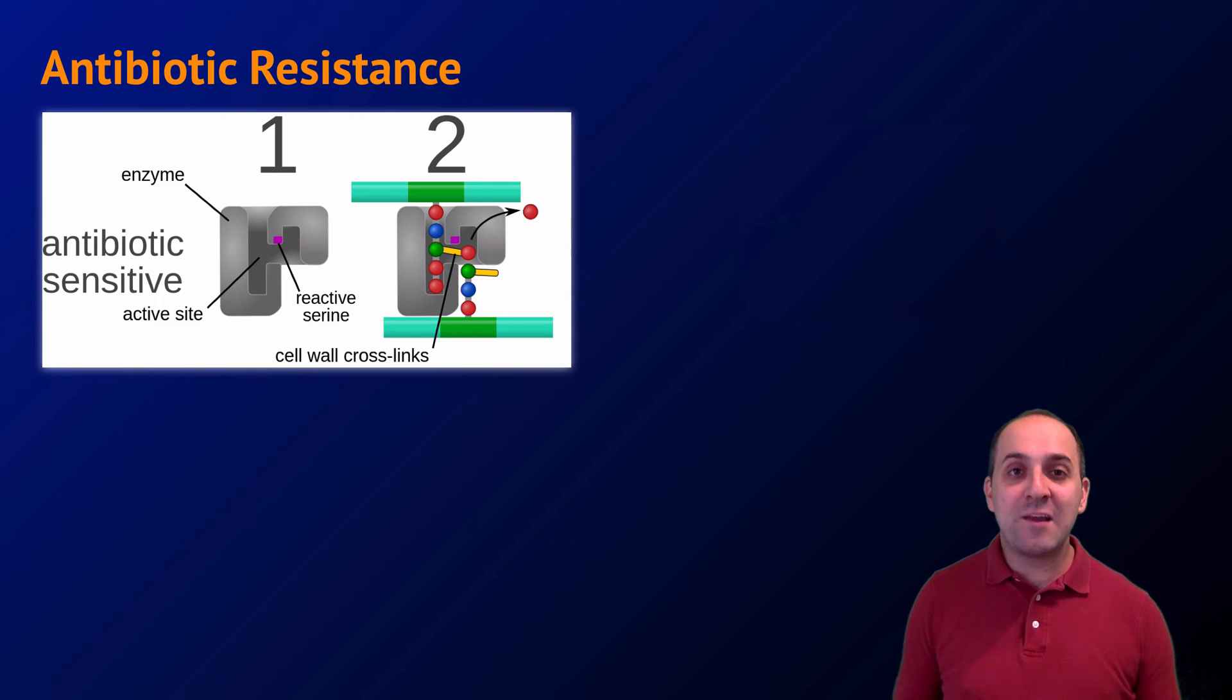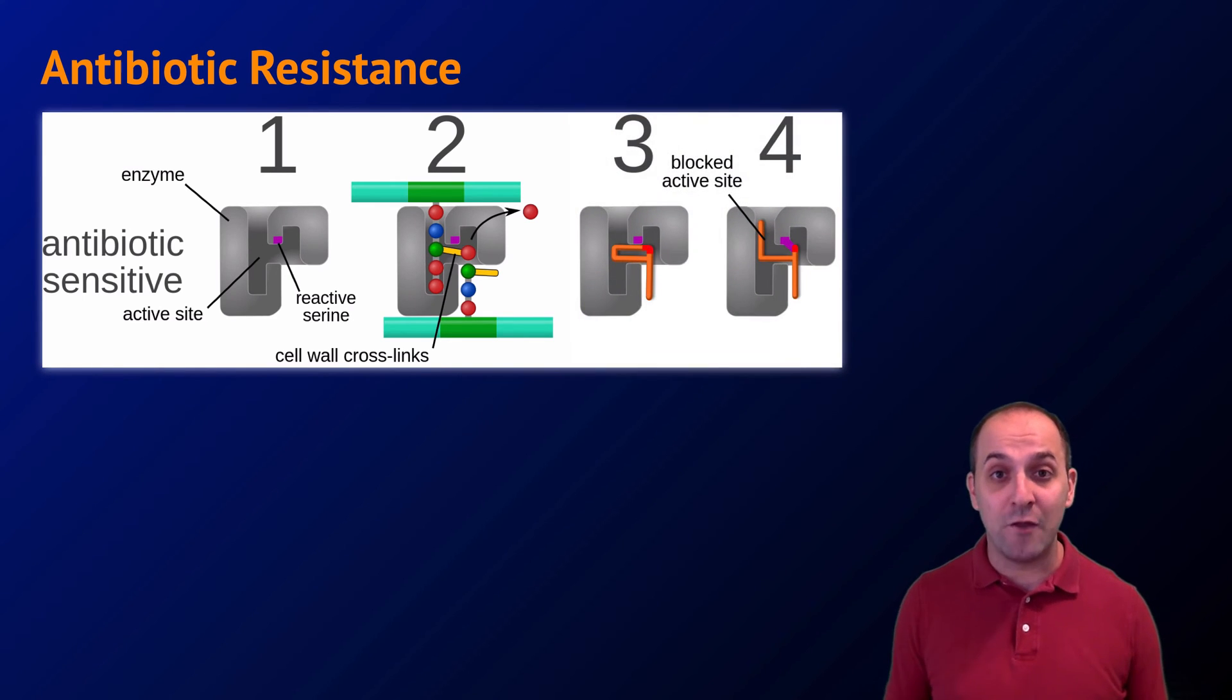What this graphic shows us is a bacterial enzyme that's involved in constructing bacterial cell walls. The cell wall is an organelle that bacteria need in order to survive. This enzyme's entire job is to help the bacteria make new cell walls. This enzyme also happens to be the main target of antibiotics like penicillin. The antibiotic molecules interact with that enzyme and block the ability of that enzyme to continue to do its job. Since that enzyme no longer functions, the cell walls can no longer be built, and the bacteria die.